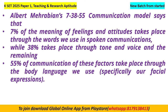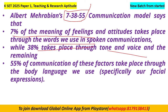You can read Albert Mehrabian's model. It is also known as the 7-38-55% communication model. It says that 7% of the meaning of feelings and attitudes takes place through the words we use in spoken communications, while 38% takes place through tone of voice, and the remaining 55% takes place through body language.